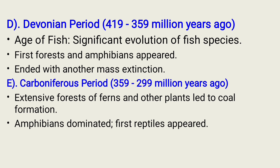The fourth sub-category of the Paleozoic Era is the Devonian Period, known between 419 up to 359 million years ago. The events recorded were: one, the age of fish — significant evolution of fish species took place, so the Devonian Period is known as the age of fish; two, first forests and amphibians appeared; and three, the Devonian Period ended with another mass extinction.